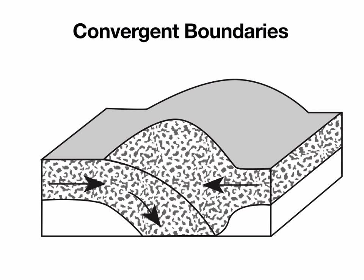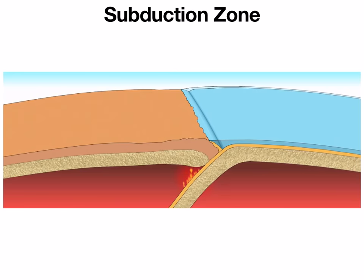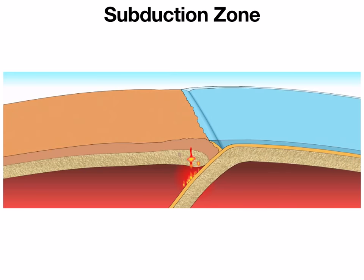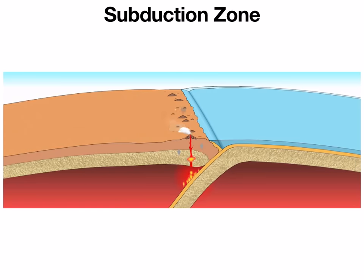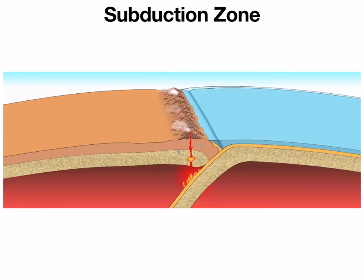The next type of plate boundary is convergent boundaries. These are a little more tricky because we have to consider not only the fact that two plates are coming together and colliding, but what type of crust is involved. We see different things happening when it's oceanic crust colliding with oceanic crust as opposed to continental colliding with continental. The first type we call a subduction zone — this happens when continental crust collides with oceanic crust. The oceanic crust sinks underneath the continental crust because oceanic crust is more dense than continental crust — it's heavier. So when the two collide, the heavier oceanic crust sinks underneath the lighter continental crust.